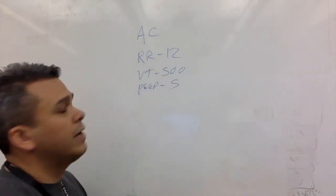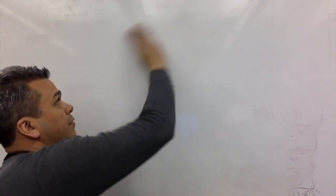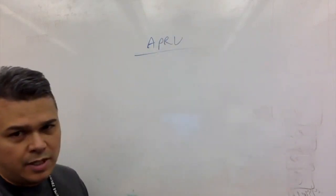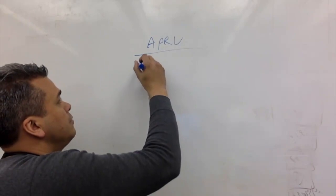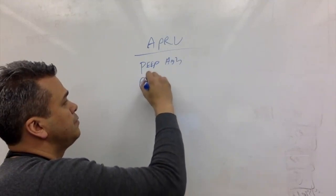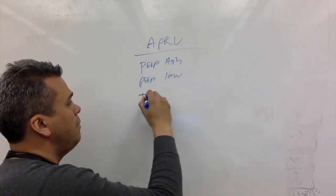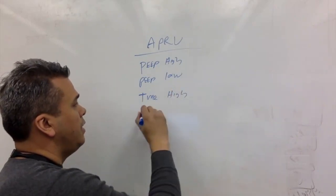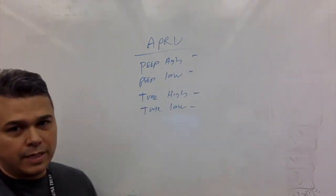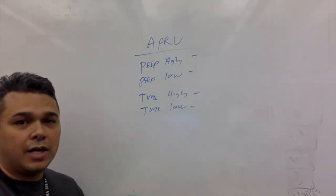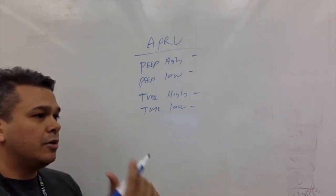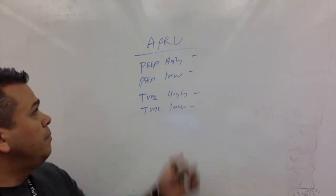This is going to represent the tidal volume, the 500 mils for every breath. That's our waveform for assist control, so pretty straightforward. But let's look at APRV. The different kind of settings we're going to have for APRV, typical vent settings: we have our PEEP high, we have our PEEP low, time high, and then time low.